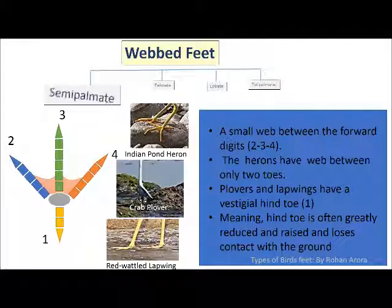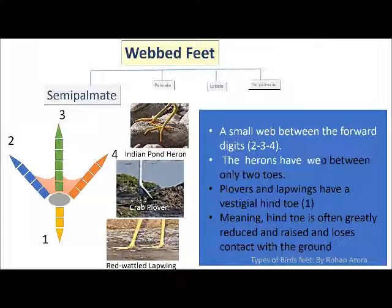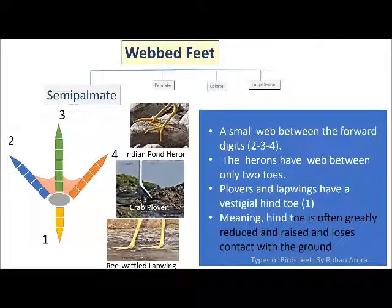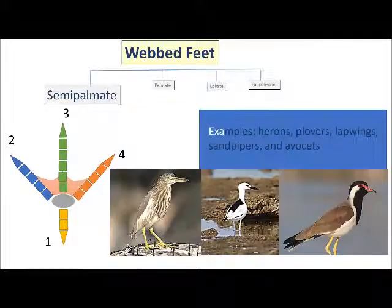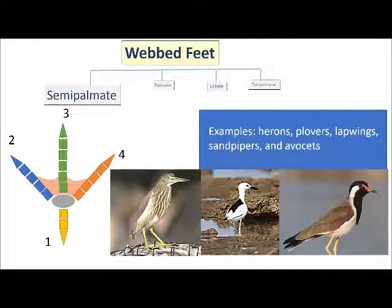Semi-palmate is another type of webbed feet. There is a small web between the forward digits, marked as 2, 3 and 4. The herons have the web between only two toes. Plovers and lapwings have a vestigial hind toe, marked as 1, meaning the hind toe is often greatly reduced and raised, and thus loses contact with the ground. Examples of semi-palmate arrangements are herons, plovers, lapwings, sandpipers and avocets.